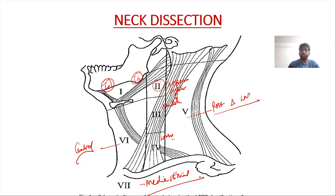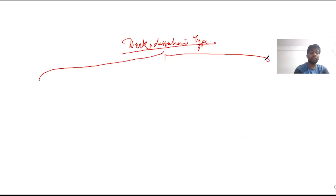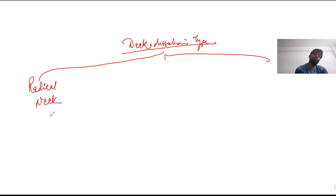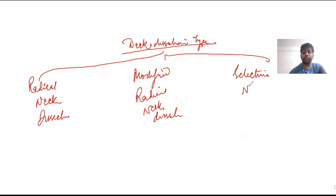Now that we have understood the various stations of lymph nodes, we will move ahead and talk about the various types of neck dissection. Broadly speaking, there are three types: the first is radical neck dissection, the second is modified radical neck dissection, and the third is selective neck dissection. We will look into them individually.